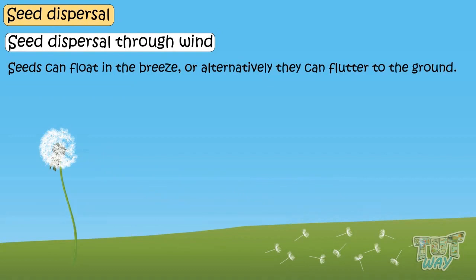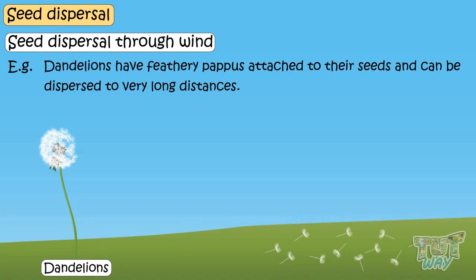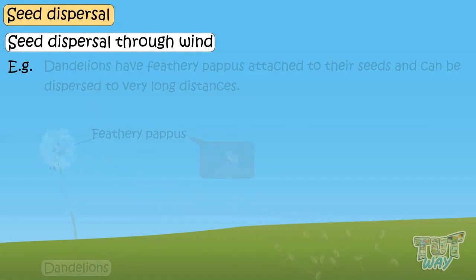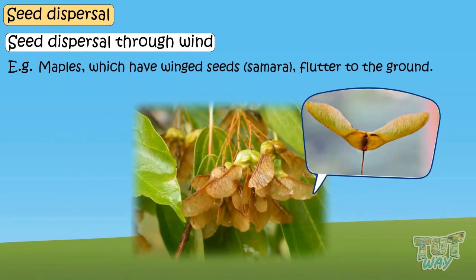The classic examples of these dispersal mechanisms include dandelions, which have feathery pappas attached to their seeds so they can disperse to very long distances. Maples, which have wing seeds, flutter to the ground.